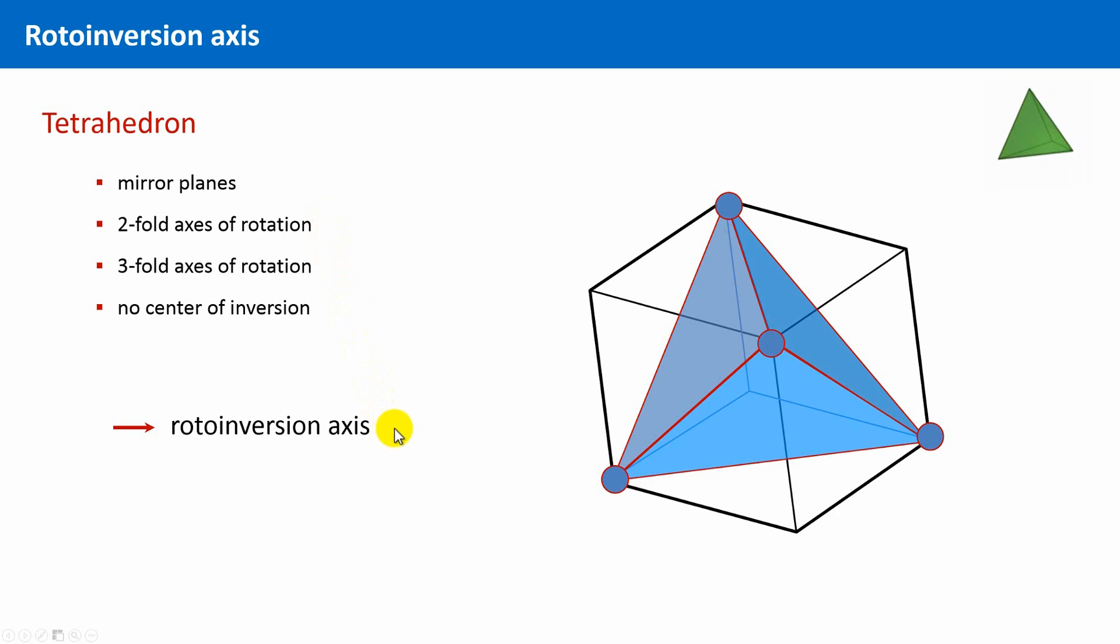However, this tetrahedron has a so-called rotoinversion axis as symmetry element. So, what is a rotoinversion axis?